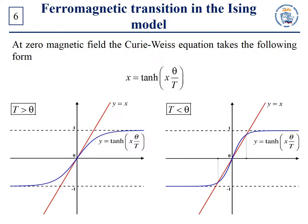Let us study the Curie-Weiss equation in more detail. Consider the case H equal to zero in the Curie-Weiss equation. The equation then takes the following form. This equation cannot be solved analytically; we shall try to solve it graphically. One can see that at T greater than θ, the Curie-Weiss equation has only one solution: x equal to zero. But at T less than θ, it has three solutions: x equal to zero, and two solutions where x is not equal to zero.